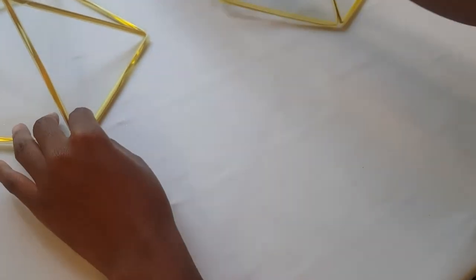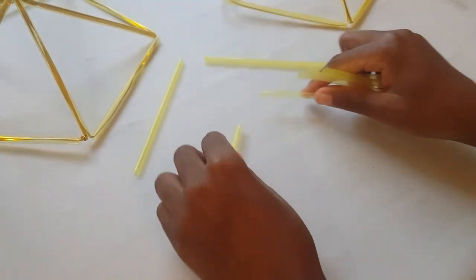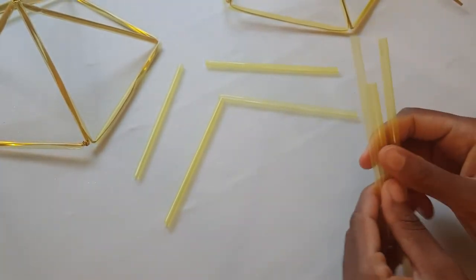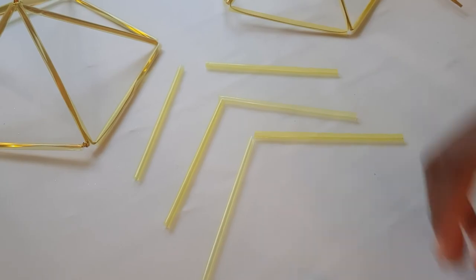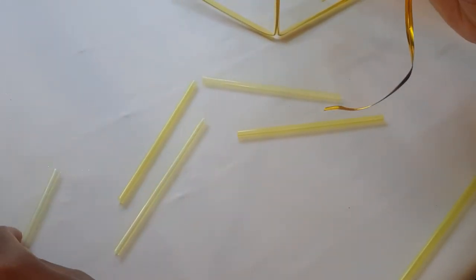I went ahead and made another one, so now we have two. You're going to use the remainder of the straws to attach triangles to one of the bases. For each side of one of the bases, you're going to attach two straws.